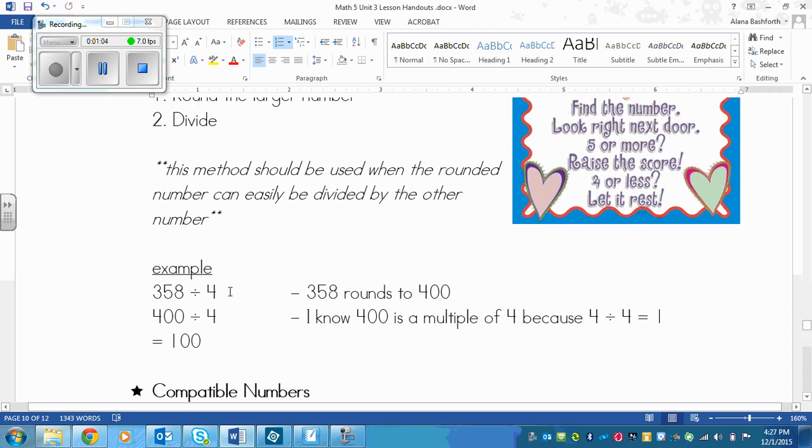Here's an example: if I have 358 divided by 4, I would round 358 to 400 because the 5 bumps the 3 up to a 4 and everything else turns to a 0. So 358 turns to 400, 4 stays the same. I know that 400 is a multiple of 4 because 4 divided by 4 is 1, so if 4 can divide by 4 then 400 can divide by 4.